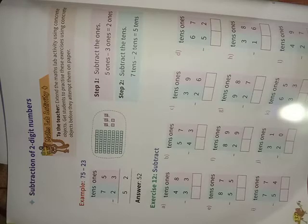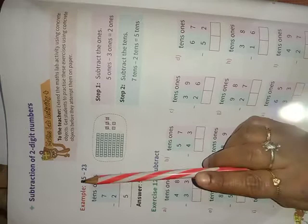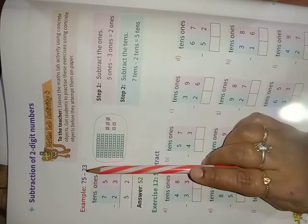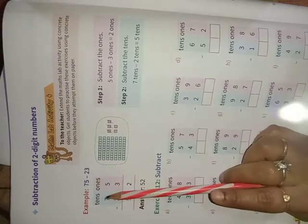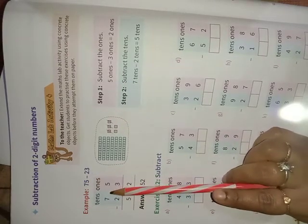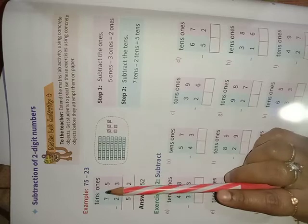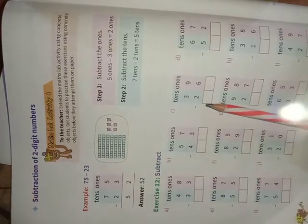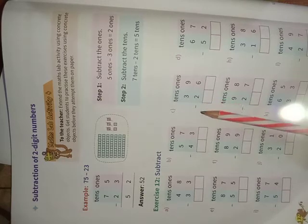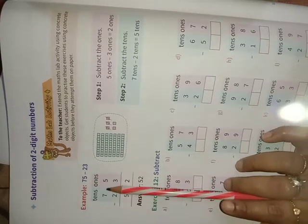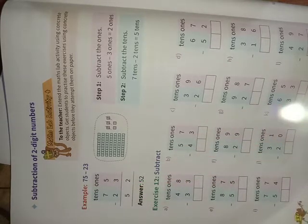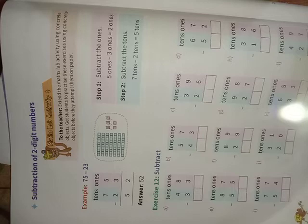So here they have given a small example, that is 75 minus 23. This problem must be kept in a vertical format first. But before keeping these numbers in a vertical format, whenever you are doing subtraction, first remember the bigger number should be kept at the top and the smaller number at the bottom. It will be easier to perform the subtraction.